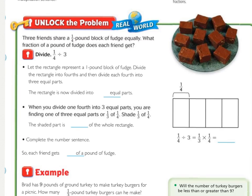Underline what you're being asked to find and circle the important information. You should have underlined what fraction does each friend get and then circled 1/4 of a pound and then how many friends? There were 3 friends.